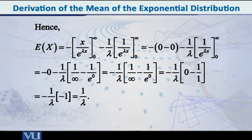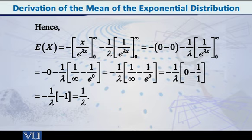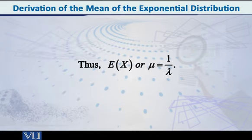After all this calculation, the final result is: the first parts both evaluated to 0, and for the second part we have -(1/lambda) times (0 - 1) = -(1/lambda) times (-1) = 1/lambda. So, as stated at the beginning, for the exponential distribution f(x) = lambda * e^(-lambda*x), the mean is equal to 1/lambda.